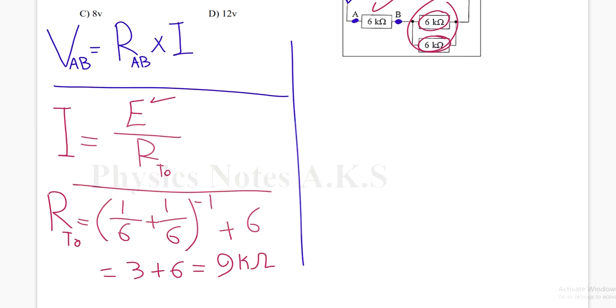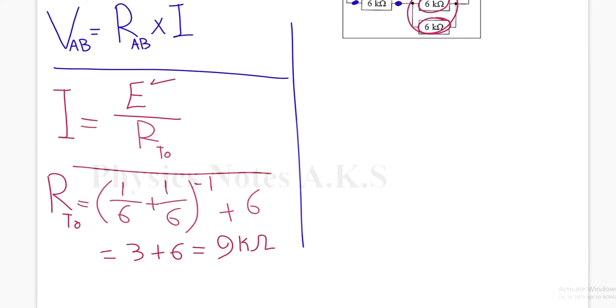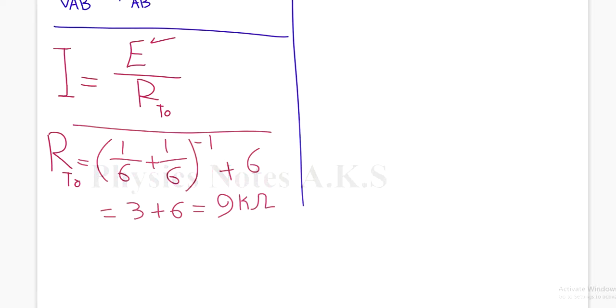It's 9 kilo ohm. Let me change it to ohm. From kilo ohm to ohm, R total is 9,000 ohms. This is the total resistance.